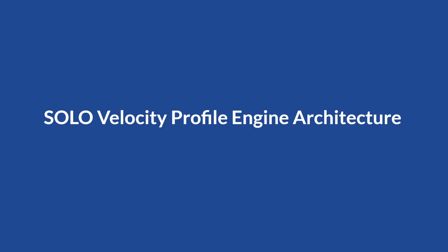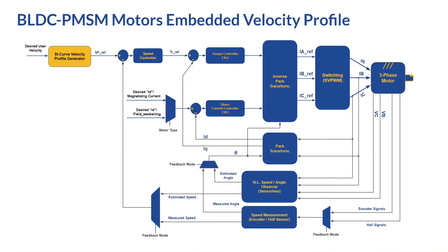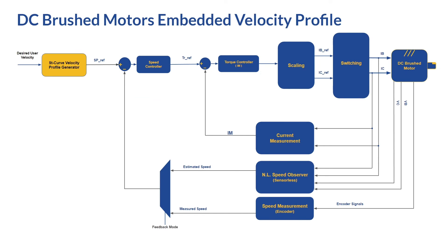You can also use the ST curve velocity profile engine for velocity controlling applications. In velocity control, there is no position loop — only the speed controller, torque controller, and direct current controller. The velocity profile provides references for the speed controller. The user sends the desired target speed, and the engine provides references every single time the controller runs, giving a very nice and smooth transition from one speed to another. The same applies for DC brush motors.